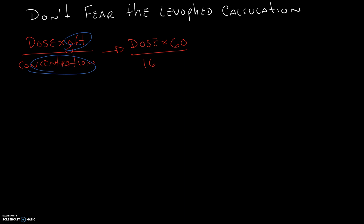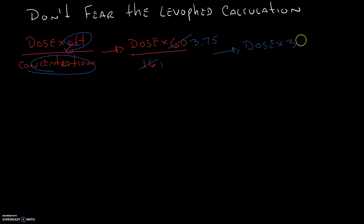Okay, so back to the calculation. We're still doing this the old way, but recognize that the 16 and the 60 are both constants — they never change. Therefore, if they never change, we can go ahead and get rid of them and come up with a new number that we can use for every calculation of Levofed all the time. 16 goes into 16 one time. 16 goes into 60 3.75 times. Therefore, we're left with a new calculation that we can use for our Levofed drip: dose times 3.75.